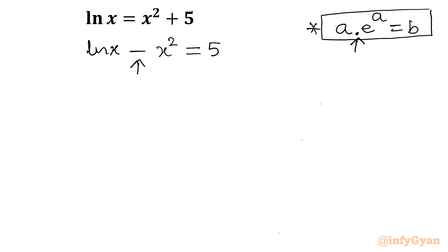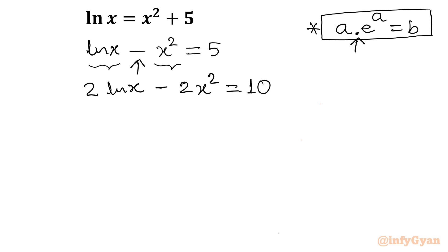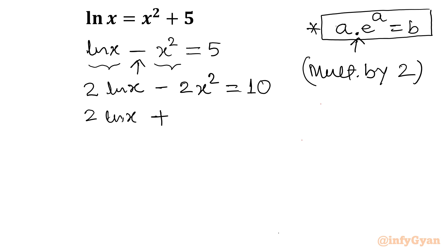Let us get started. We are getting x² here but ln(x) only on the other side. So for that purpose, I will multiply the whole equation by 2 first. The equation will become 2·ln(x) − 2x² = 10. I multiplied both sides by 2. Now, the dot product is there along with the minus sign. I will write this equation as 2·ln(x) + (−2x²) = 10. The minus sign is with 2x².